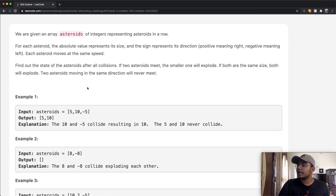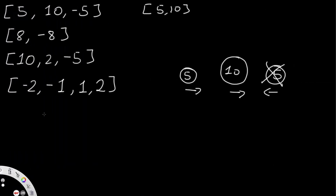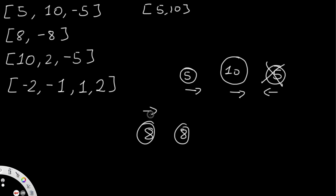Our answer is correct. So let's go through two more examples quickly. Let's say we have 8 and negative 8 — same size, different directions. This moves to the right, this moves to the left. Obviously they're going to end up colliding and both break. The result for this is just going to be an empty array.